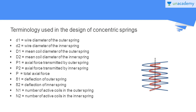The terminology used in the design of concentric springs is as follows. d1 is the wire diameter of the outer spring; d2 is the wire diameter of the inner spring. D1 (capital) is the mean coil diameter of the outer spring; D2 is the mean coil diameter of the inner spring. P1 is the axial force transmitted by the outer spring; P2 is the axial force transmitted by the inner spring; P is the total axial force acting on the concentric spring. Therefore, P1 plus P2 equals P. Delta 1 is the deflection of the outer spring; delta 2 is the deflection of the inner spring. N1 is the number of active coils in the outer spring; N2 is the number of active coils in the inner spring.